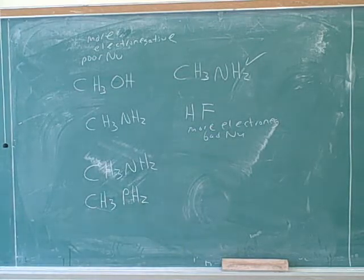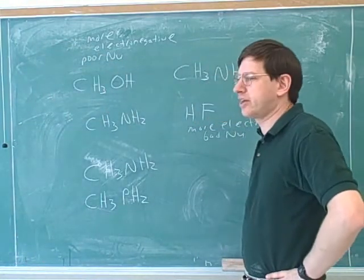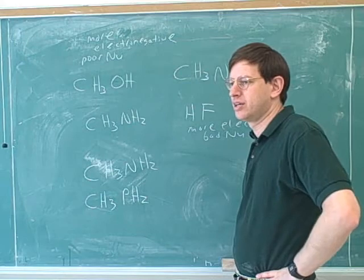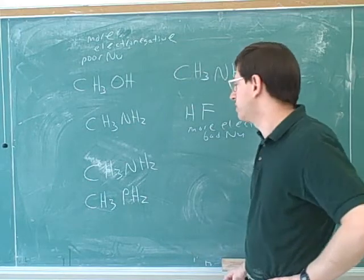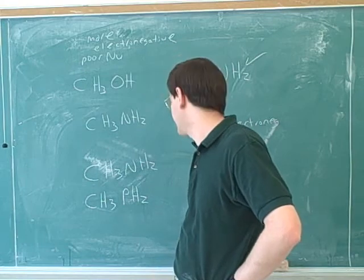All right. So that analysis sounded good. Now, how did you know to focus on size here and not electronegativity? Because they're in the same column. That's right. The handout tells us that when things are in the same column, the most important difference is their size, not their electronegativity.